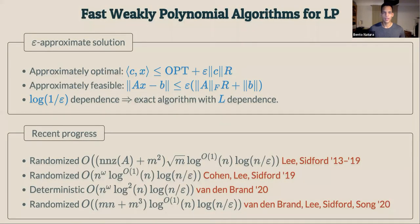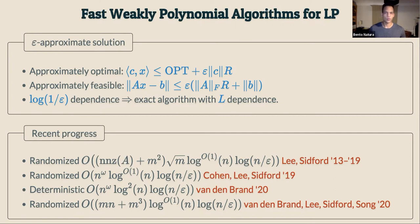In recent years there has been big progress on fast weakly polynomial algorithms for linear programs. Many results exist for different instances depending on the sparsity and rank of the constraint matrix, both randomized and deterministic. These solutions give epsilon-approximate solutions: if epsilon is part of the input, they give an approximately optimal and approximately feasible solution, with runtime depending on the inverse of epsilon logarithmically. For algorithms that allow bit complexity dependence, such a solution for small enough epsilon suffices to round to an optimal solution — that is why these solvers are weakly polynomial but not strongly polynomial.